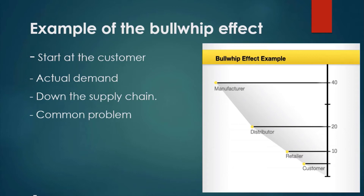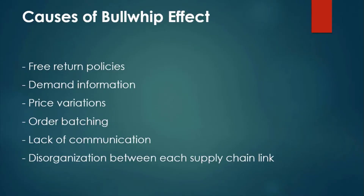Now we will see the causes of the Bullwhip Effect. There are many factors that can cause the Bullwhip Effect in a supply chain. First is Free Return Policies — customers may intentionally overstate demands due to shortage and then cancel when supply becomes adequate again. Without a return penalty, retailers will continue to exaggerate their needs and cancel orders, resulting in excess material. Second is Demand Information — relying on past demand information to estimate current demand does not take into account fluctuations that may occur over a period of time.